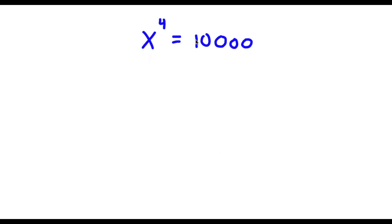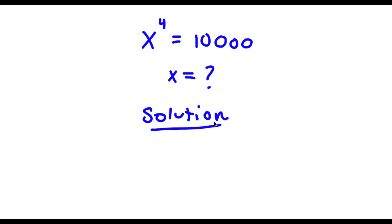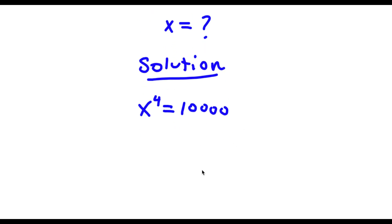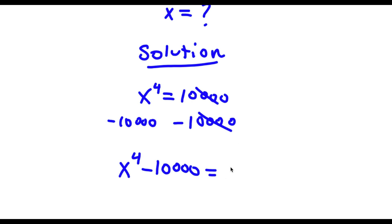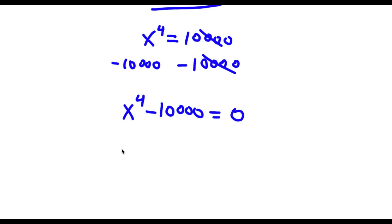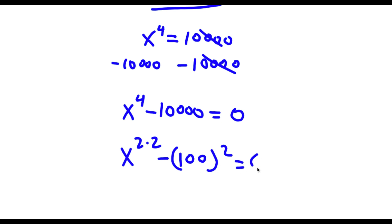So I have x to the power of 4 is equal to 10,000, and I want to find the value of x. I'll subtract 10,000 on both sides, giving me x to the power of 4 minus 10,000 is equal to 0. Now x to the power of 4 I can rewrite as x to the power of 2 times 2, since 4 equals 2 times 2. And 10,000 I can rewrite as 100 squared.